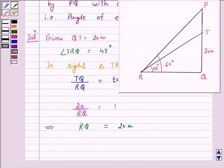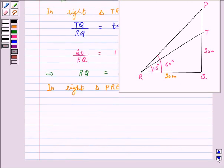Again, in right angle PRQ we have RQ is equal to 20 meters. Let PT, the height of the tower, is h meters. Therefore, PQ is equal to 20 plus h meters.